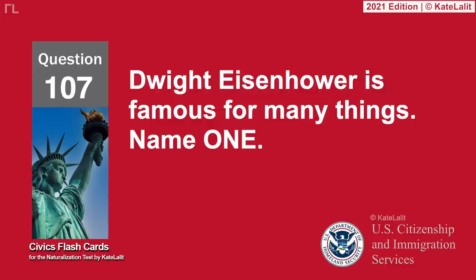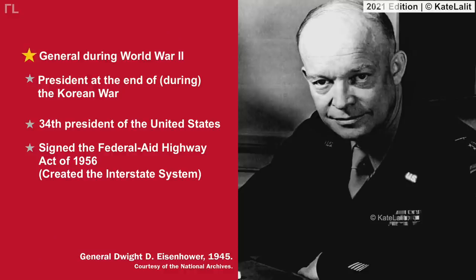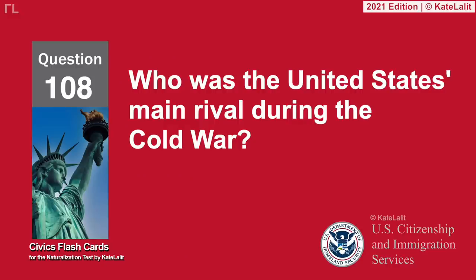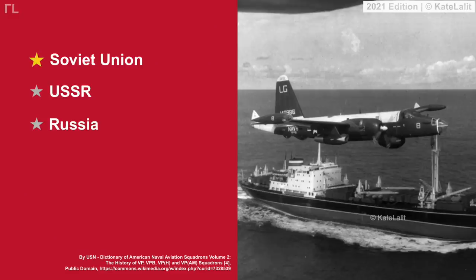Dwight Eisenhower is famous for many things — name one: General during World War II. President during the Korean War. 34th President of the United States. Signed the Federal Aid Highway Act of 1956 — created the Interstate System. Who was the United States' main rival during the Cold War? Soviet Union — USSR — Russia.